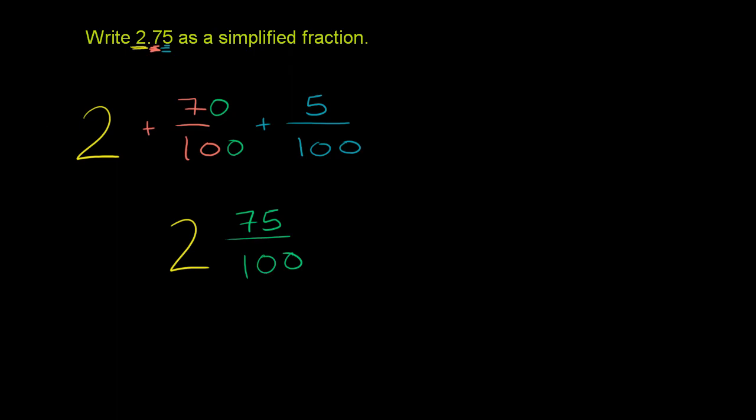And the largest number that goes into both, if you're familiar with quarters, is 25. 3 quarters is 75 cents. 4 quarters is 100 cents, or 4 quarters is a dollar.